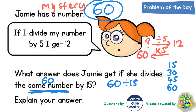So the answer to 60 divided by 15 is 4. The mystery number must be 60, and when she divides 60 by 15 she gets 4, because 4 times 15 is 60.